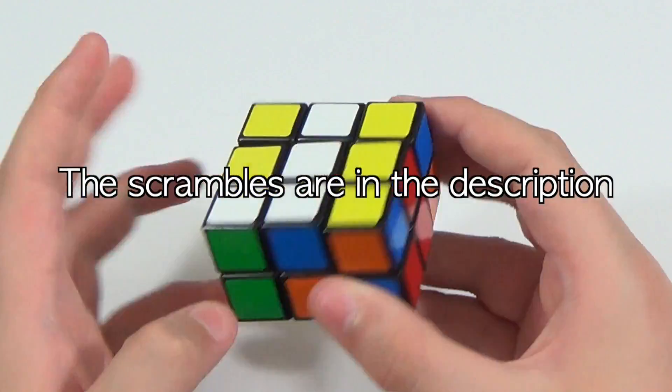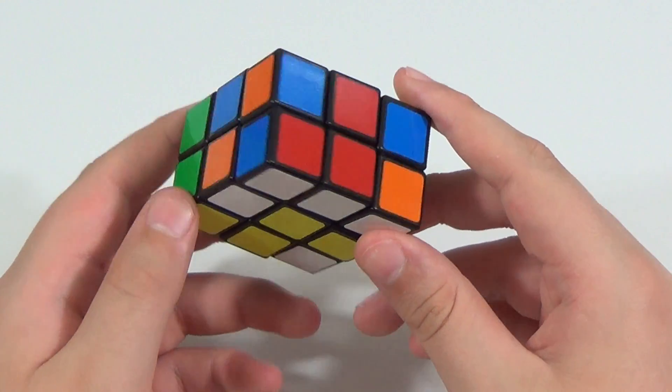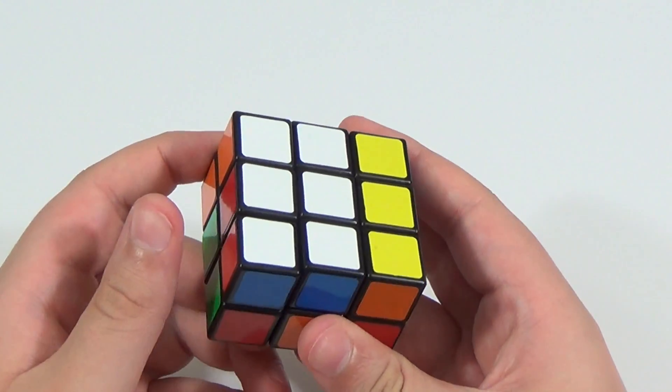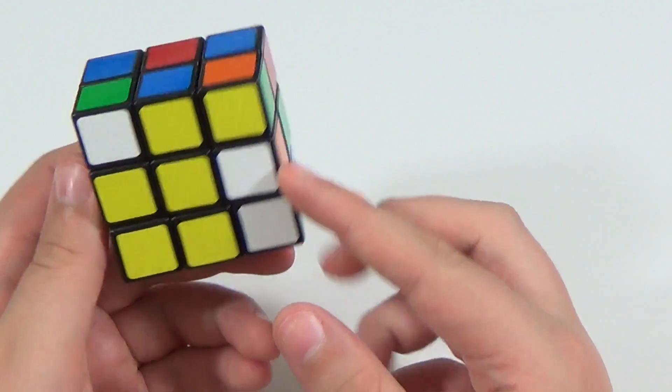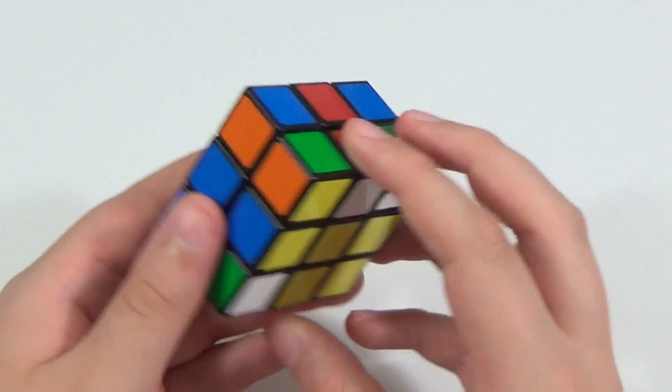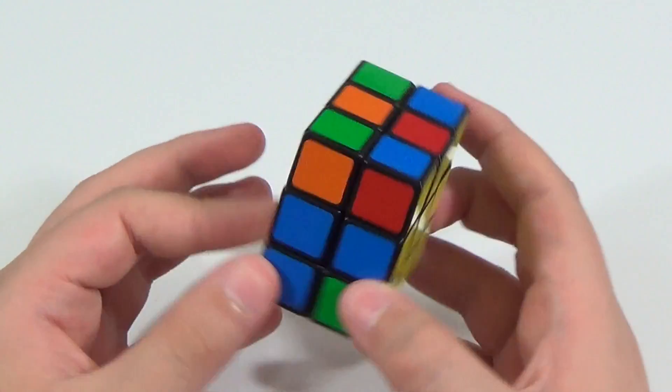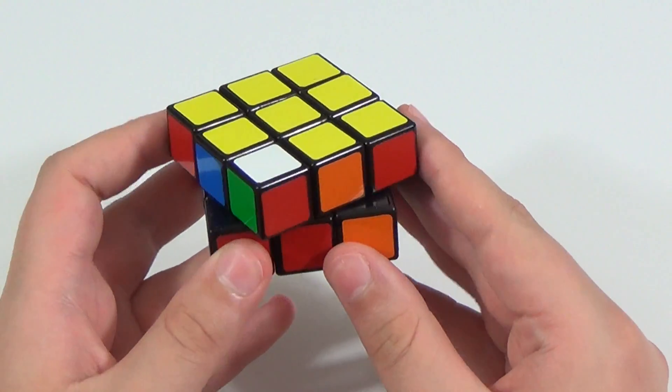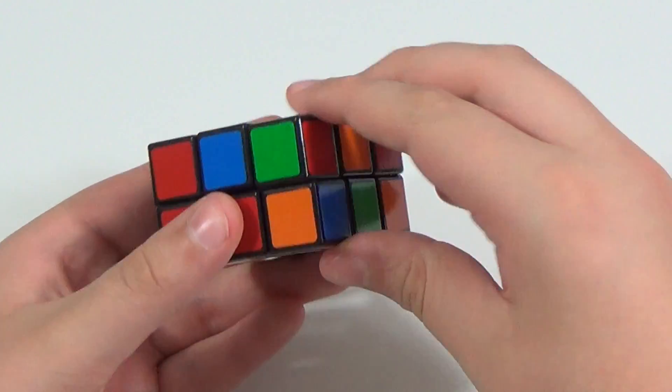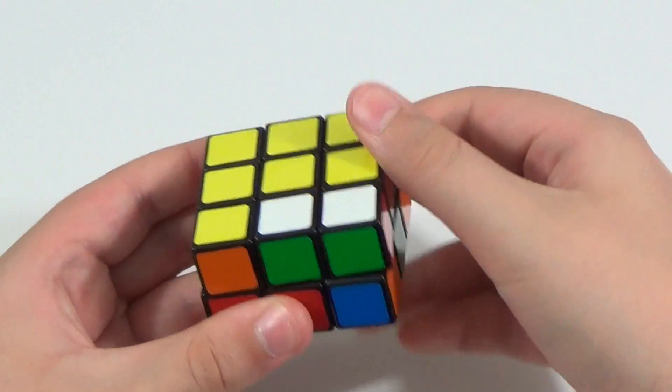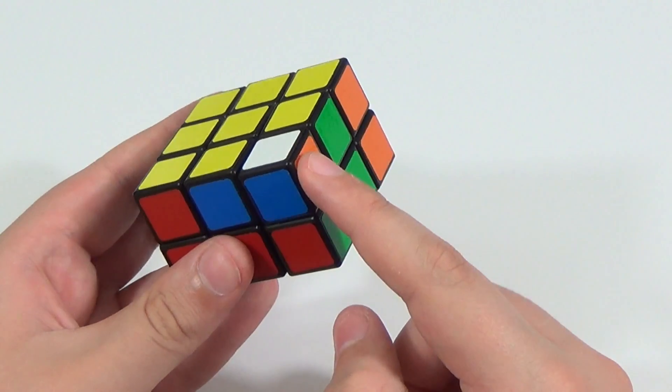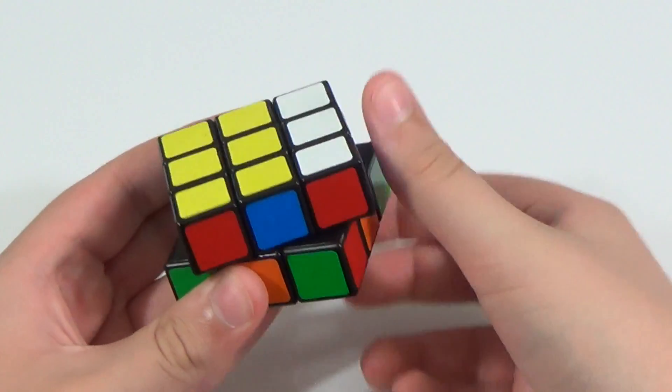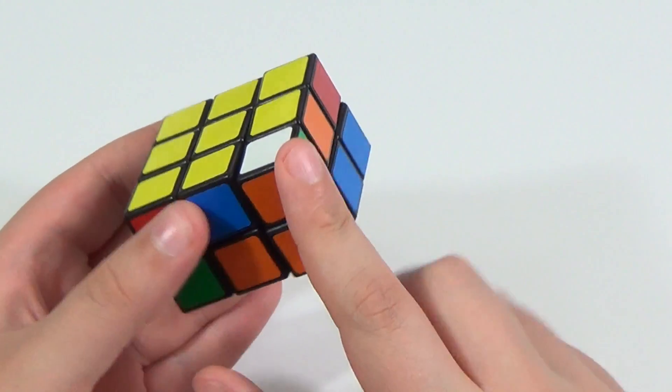So starting with the cross, the blue and green edges are already in. So we'll put in the red one next. Red goes to the left of blue, so we'll turn it over there and put it up. Then the last one is the orange piece, which we can turn here and put up. Then we can turn the cross to the bottom and start putting in the corners. Starting with this one here, so we can turn it above the spot it needs to go. Perform the algorithm, just like that. That brought out another corner, which we can put over its place here and put in just like that.